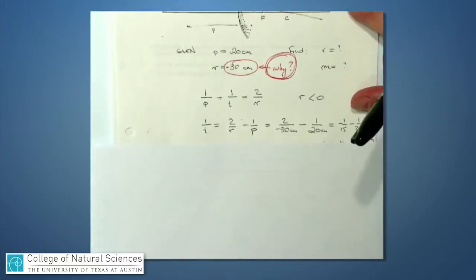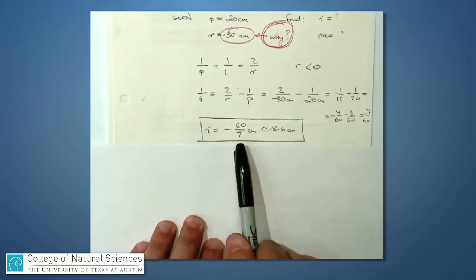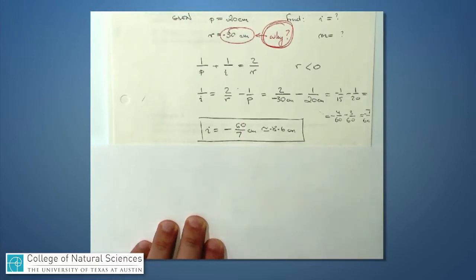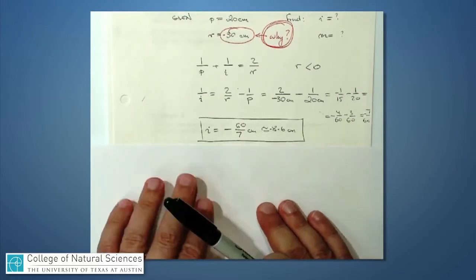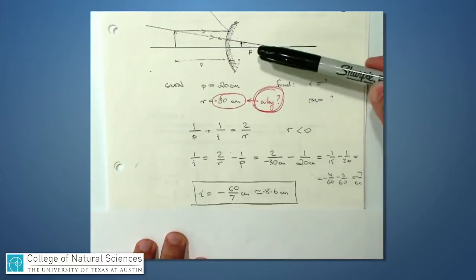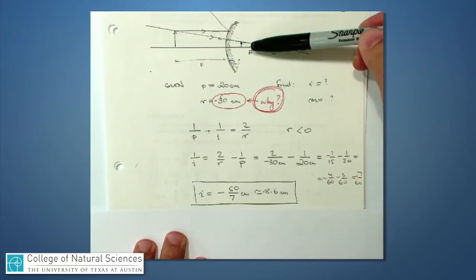And if I write this out, I find that i is minus 60 over 7 centimeters, which is about minus 8.6 centimeters. That tells me, looking back at my picture, that i is on this side of the mirror. It's not as far over as the focal length.